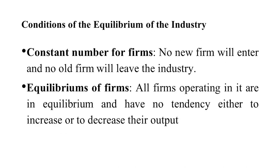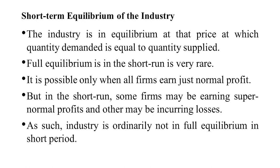The conditions of equilibrium of the industry are: first, a constant number of firms — no new firm enters and no existing firm leaves the industry. Second, all firms operating individually must be in equilibrium, with no tendency either to increase or decrease their output. If both these conditions are fulfilled, the industry will be in equilibrium.